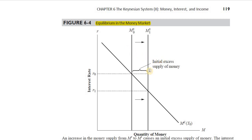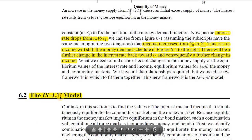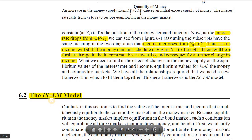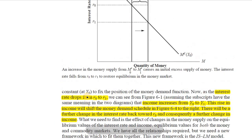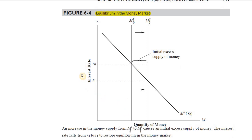Up till now we have seen the equilibrium in the money market and how it was arrived at — it was really simple. In today's lecture we will be talking about the IS-LM model. We already have a simplified model where we arrived at the equilibrium level of interest rate by the intersection of money demand and money supply. From that we get investment, then aggregate demand, then the equilibrium level of income in the economy.